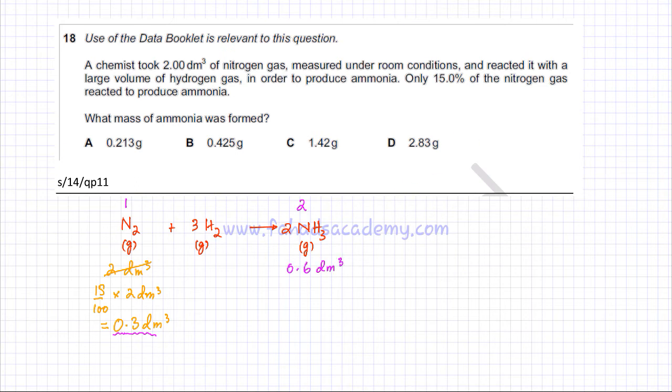According to this ratio, 0.3 dm³ nitrogen would produce 0.6 dm³ of ammonia gas. Remember for gases the mole ratio and the volume ratio is exactly the same. So 1 ratio 2, 0.3 producing 0.6 dm³.